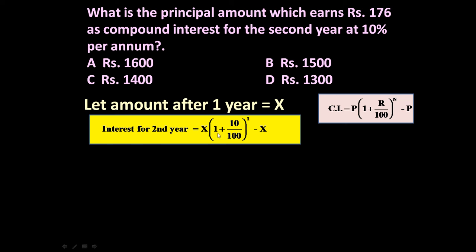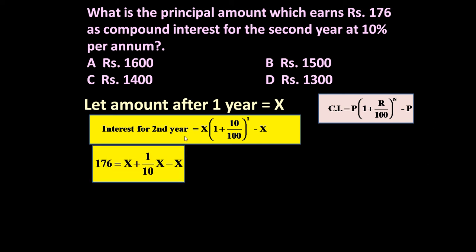So interest for second year is equal to X into 1 plus R, where R is rate of interest 10%, so 10 upon 100 raised to the power 1 because it is invested for one year, minus X because we are calculating interest for second year. It is only for one year duration, but interest for second year is given rupees 176.